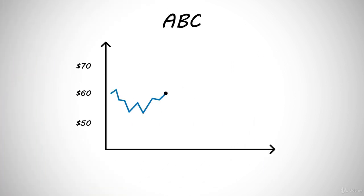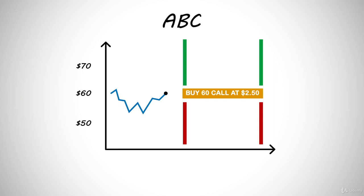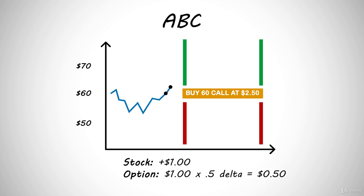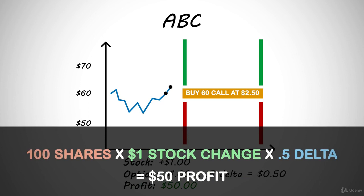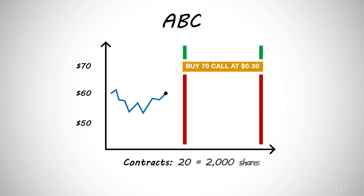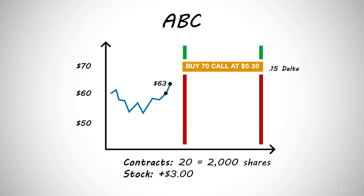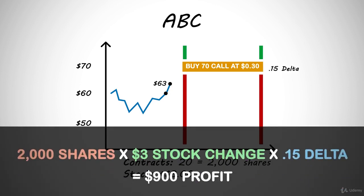Delta also tells us how much money we're going to make or lose in a $1 swing in the stock. If we buy one contract of the 60 strike call for $2.50 and the stock trades up $1 the next day, we will make $1 times the delta for a profit of $0.50 per share. Being that one contract controls 100 shares, this is a $50 profit. If we were to buy 20 contracts of ABC 70 strike price calls for $0.30 with a 0.15 delta, and the stock traded up $3 the next day, we know 20 contracts control 2,000 shares. We would multiply the number of shares times the stock price change times the delta, and our profit would be $900.